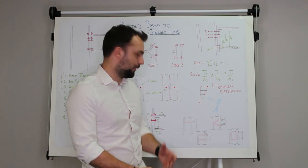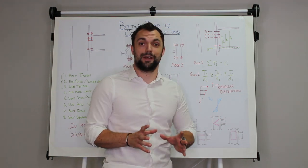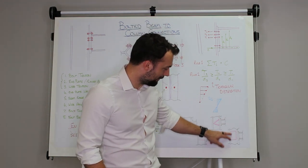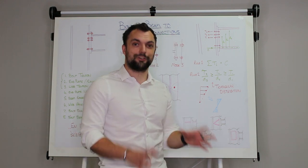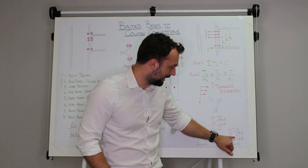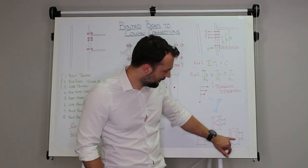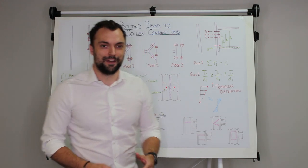The final way is to actually have a supplementary beam, a supplementary plate welded to the web of the column. Now this will help you because it will not only increase the tension capacity, the compressive capacity, but also the shear capacity of that column.